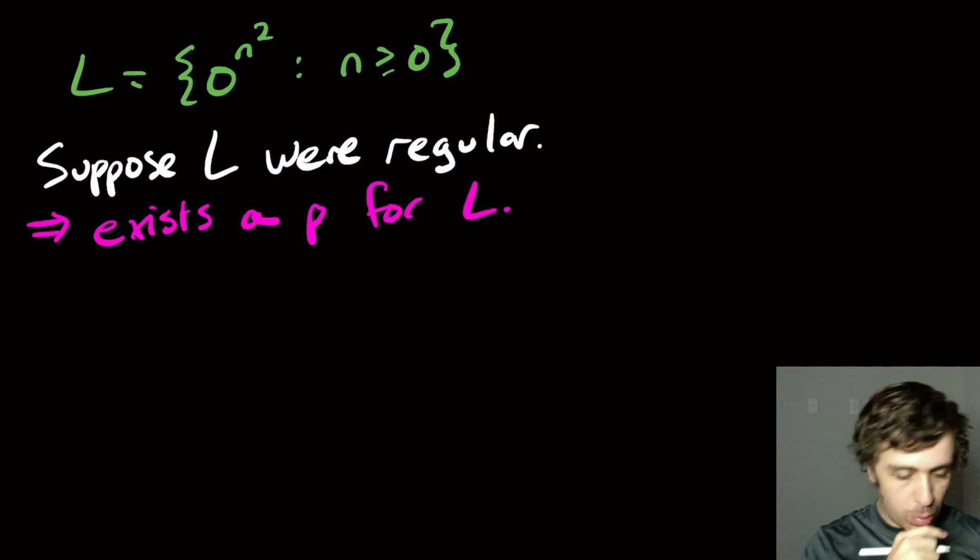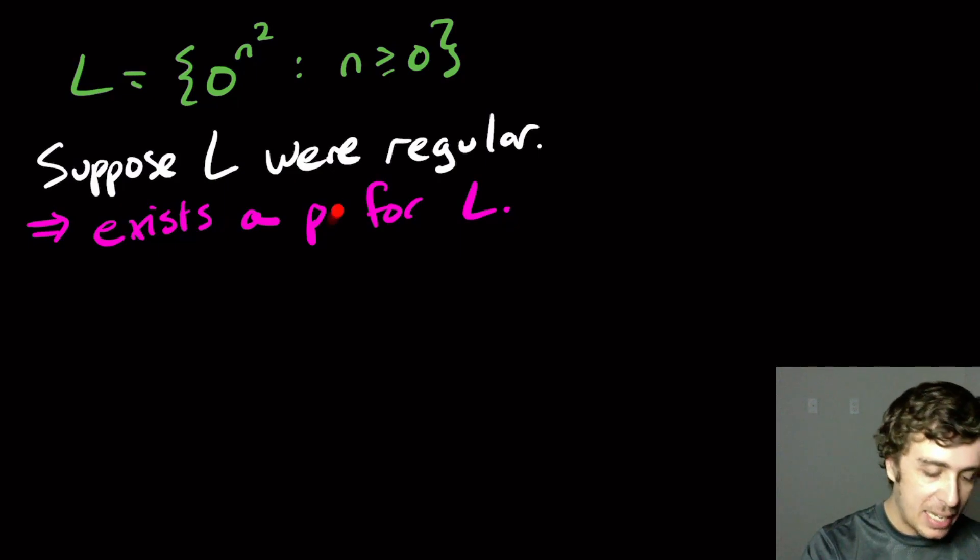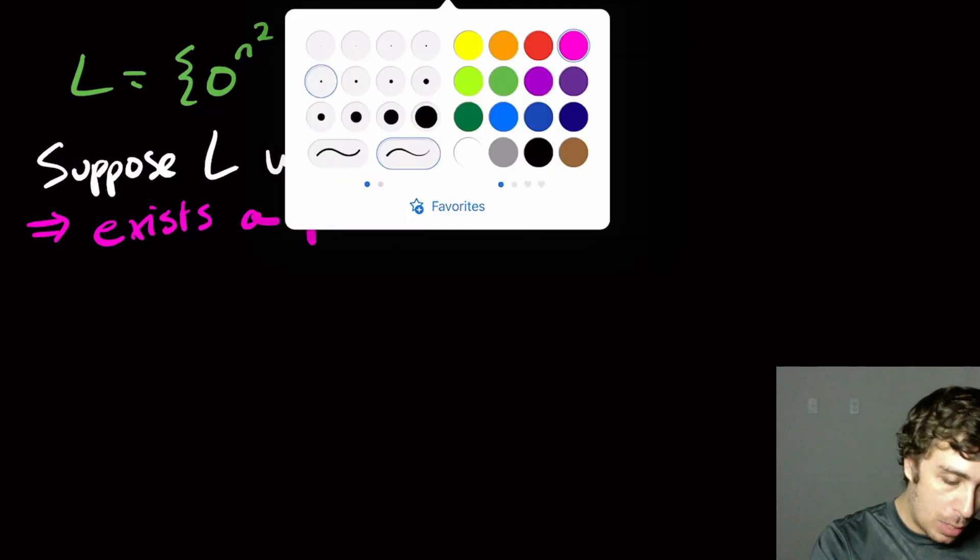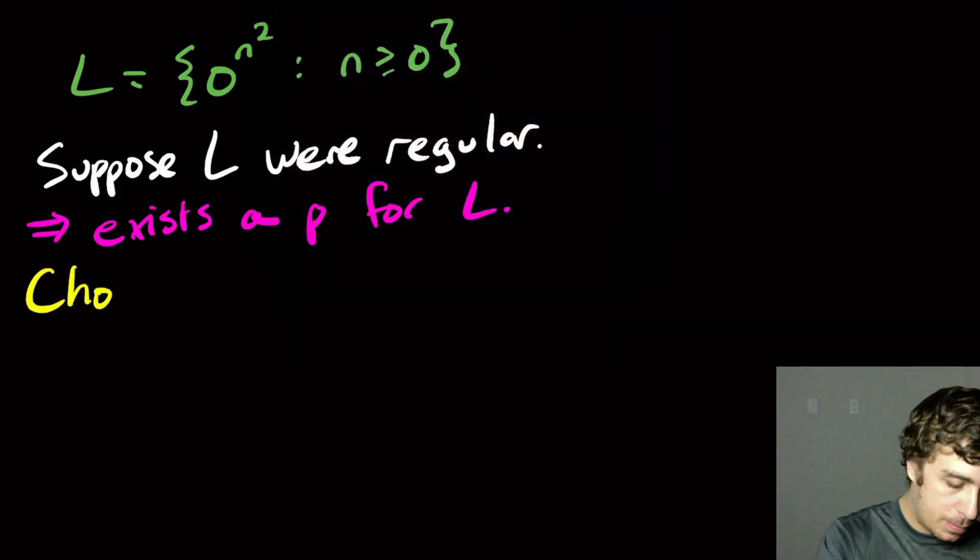Then what can we do? Well, we need to pick a string that's in the language. So the usual technique is to substitute the p into the exponent right here, where n is, not n squared, it'd be n. So the string that I'm going to pick here, choose w equal zero to the p squared.